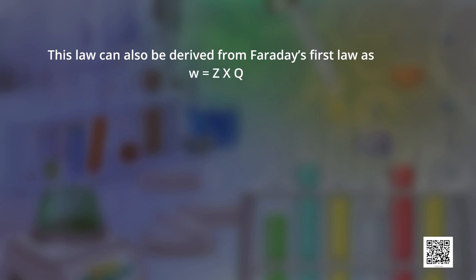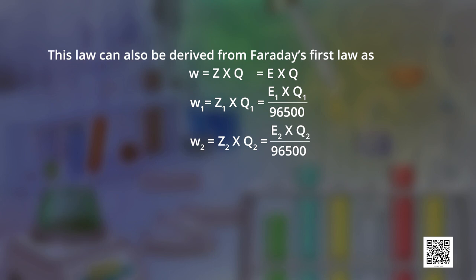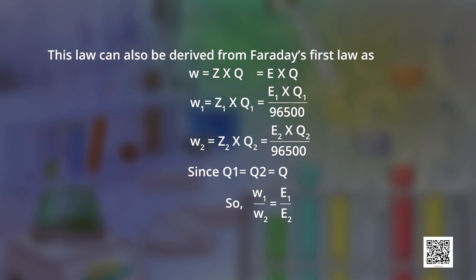This can be derived from Faraday's first law as W = Z × Q (electrochemical equivalent × charge). For the first electrode: W₁ = Z₁ × Q₁ = E₁ × Q₁ / 96500. For the second electrode: W₂ = Z₂ × Q₂ = E₂ × Q₂ / 96500. Since the same charge is passed through the system, Q₁ = Q₂ = Q, and so we get the expression W₁/W₂ = E₁/E₂.